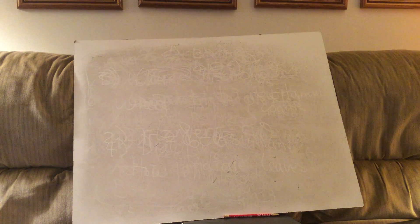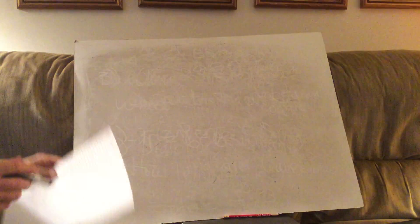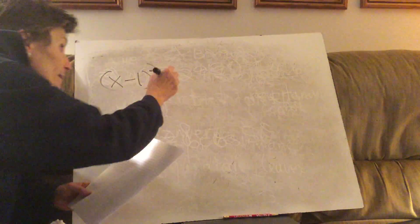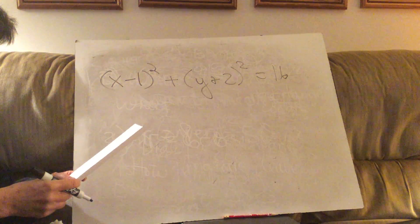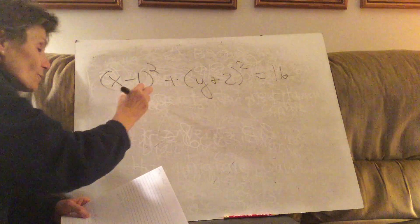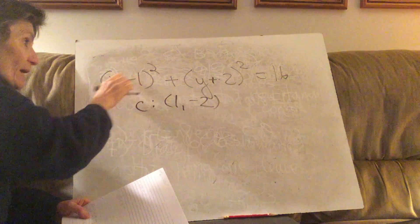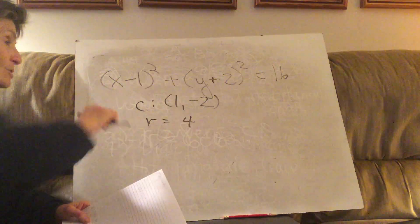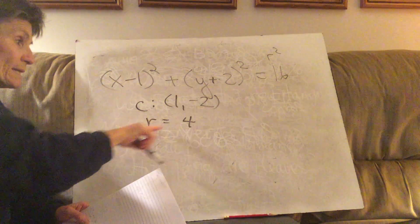Today we're going to talk about the conic sections — this is the beginning of analytical geometry — and we'll start with the easiest: the circle. Looking at notes 8.1 number one, our job is to find the center and the radius. The center of this circle is (1, -2) — you take the opposite of each value — and the radius is 4, the square root of 16, because that number is r².